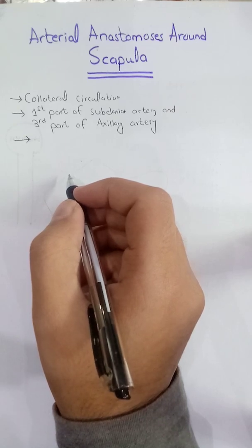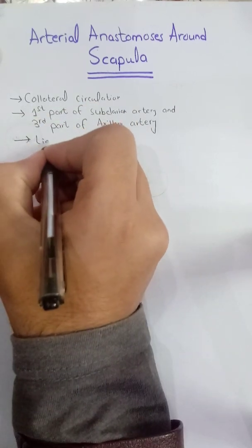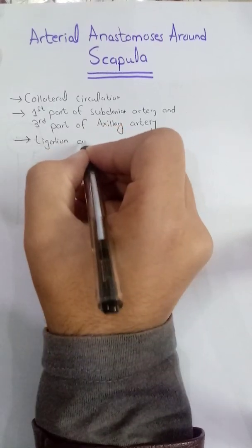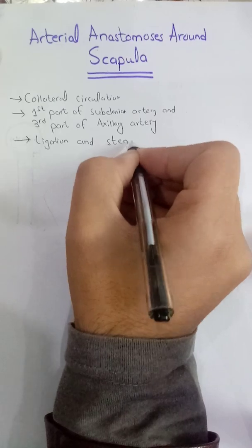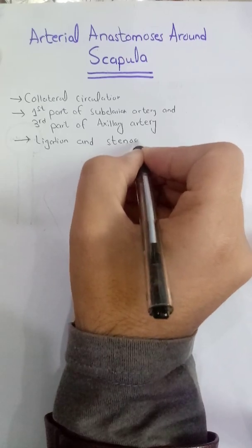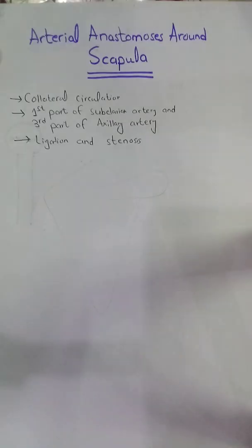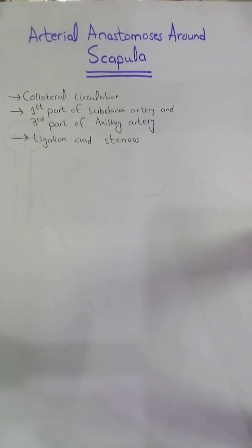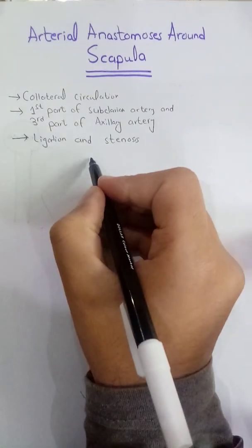It is also important in stenosis of these arteries. Now we will draw this anastomosis and then we will see the branches of the subclavian and axillary artery which are involved in this anastomosis.